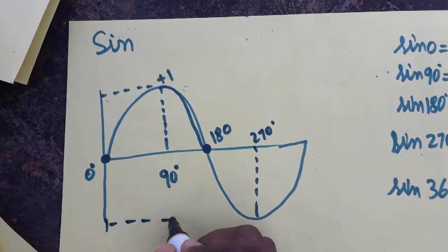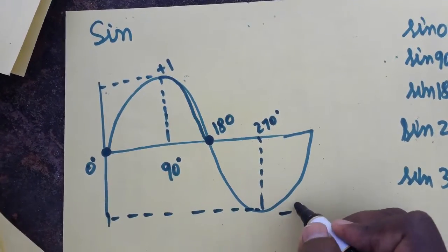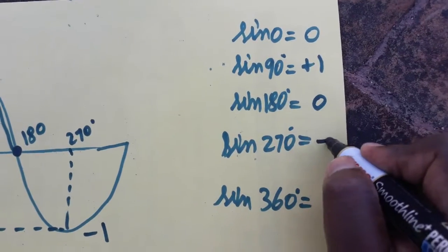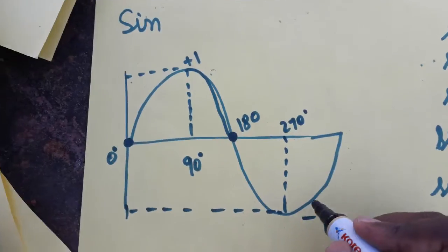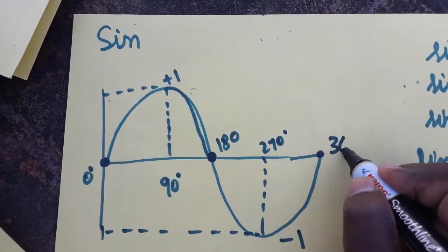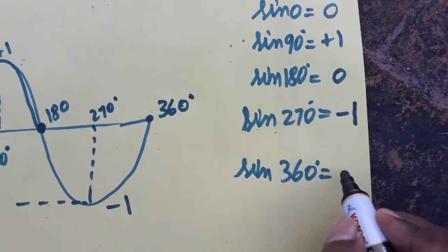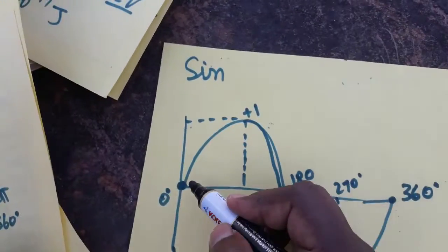So sin 270 we can take it as minus 1. Again sin 360 degree, so the sin 360 degree we have the value of 0.